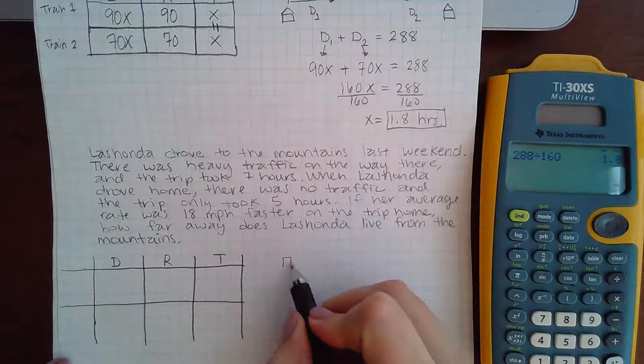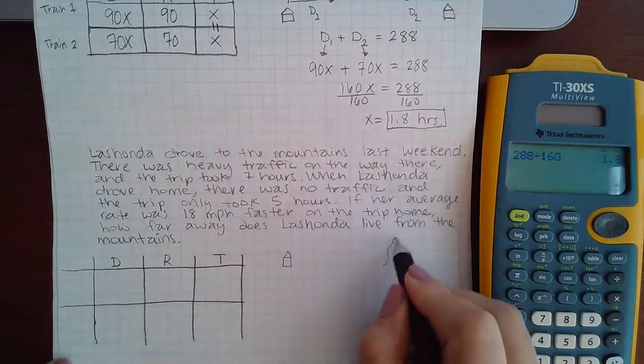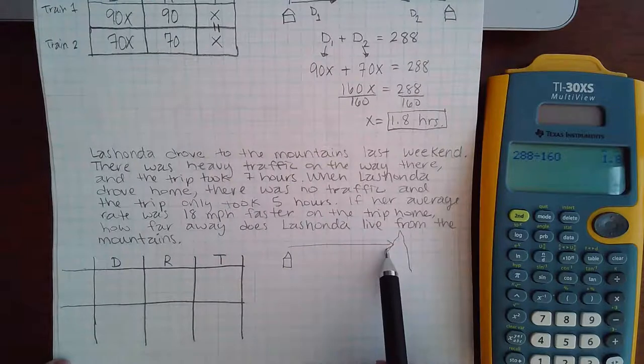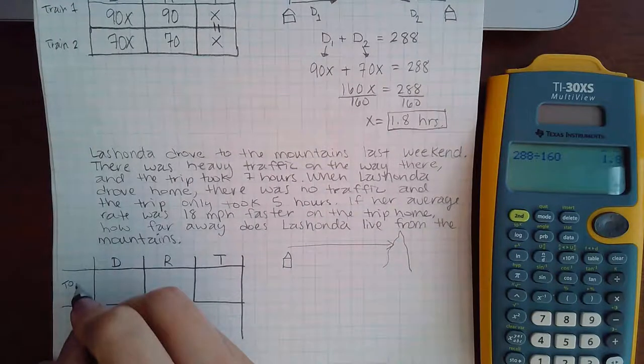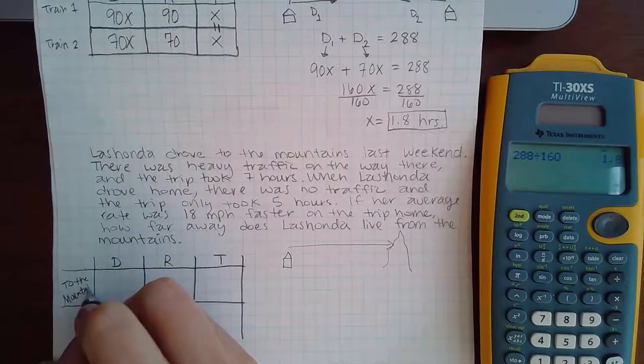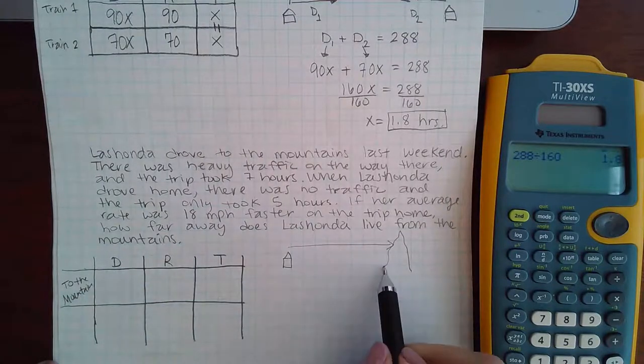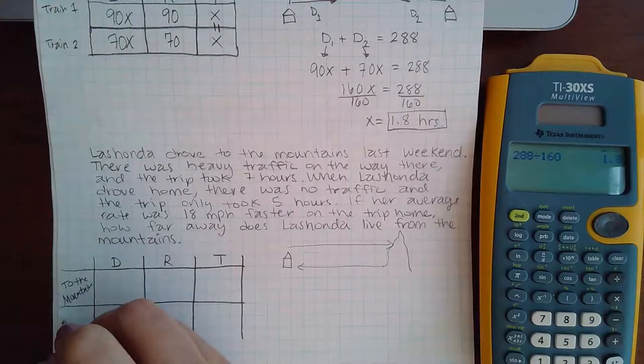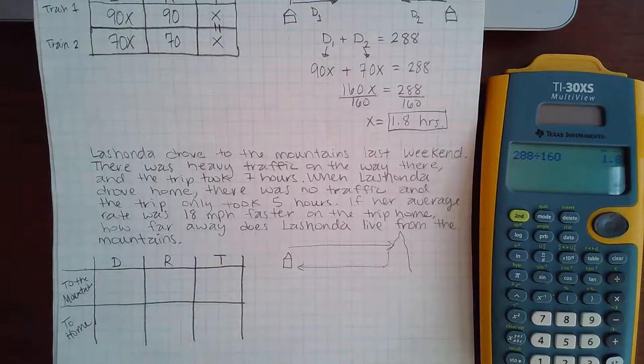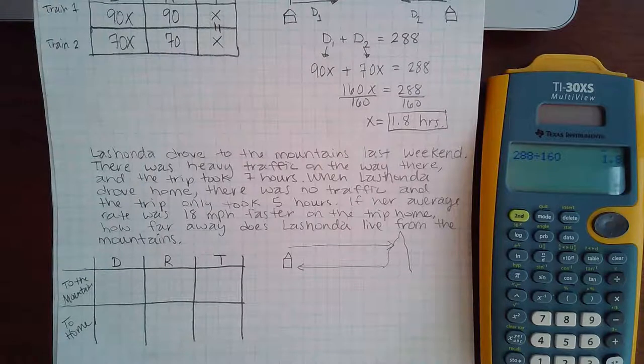So we've got LaShonda's house, we've got this giant mountain, and she's gone the trip to the mountains. So we've got to the mountains, and then she takes a trip home. So to home. Those are the different situations that we have going on here.